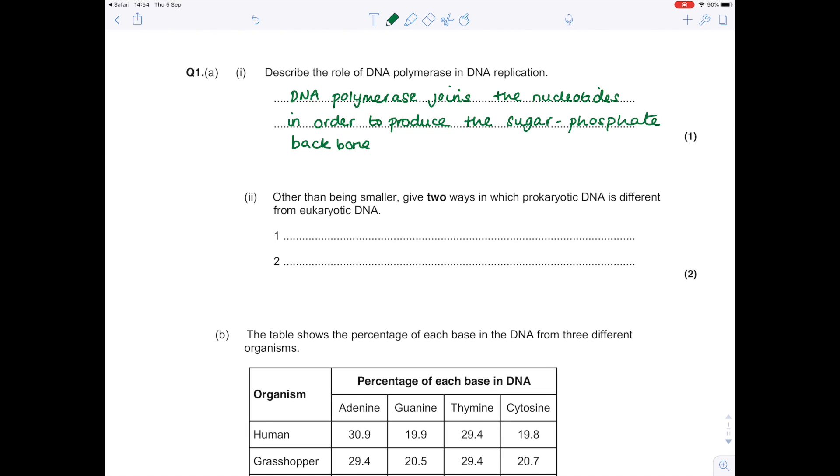Other than being smaller, give two ways in which prokaryotic DNA is different to eukaryotic DNA. Remember that with prokaryotic DNA we're looking at bacterial DNA, and remember some of this DNA is found in nucleoids and some is found in the form of circular strands called plasmids. This does not exist in eukaryotic DNA. And the other thing with prokaryotic DNA is there's no non-coding DNA—in fact there's only exons present.